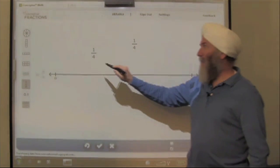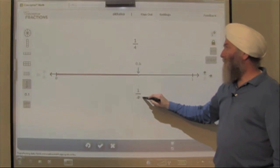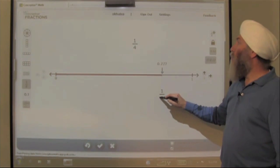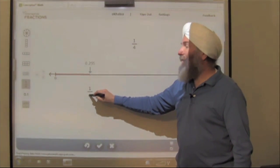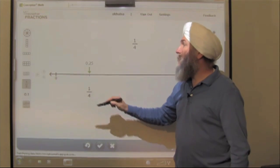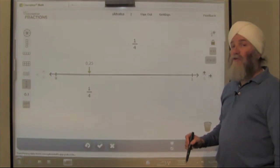Now I've got my 1/4 and I'm placing it on the number line. Where does it go? Well, we know it belongs here, and if we know our decimal equivalents, 1/4 is 0.25.